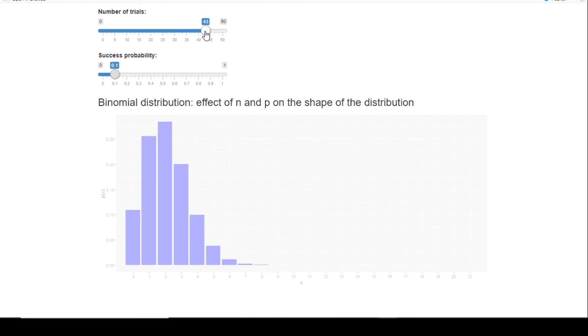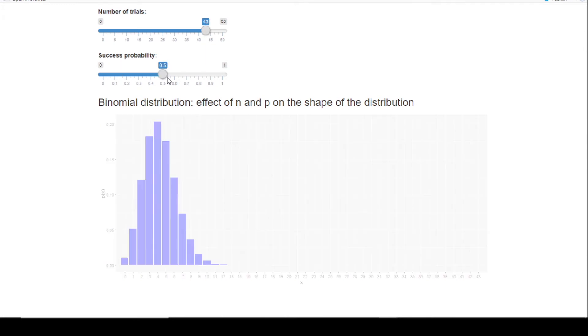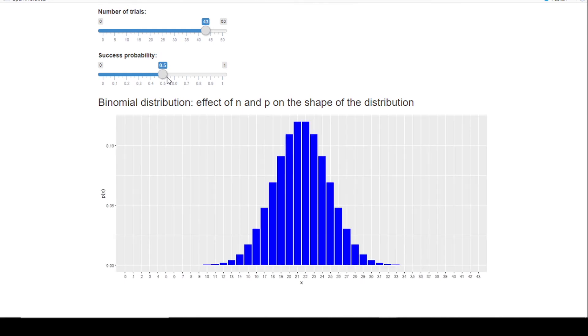When my n is 43, the distribution is even more symmetrical. And now I can change my p again to 0.5. Now you can see for p=0.5, and my n quite large, my distribution is very nice and symmetrical.